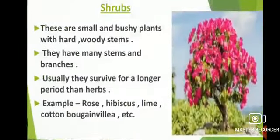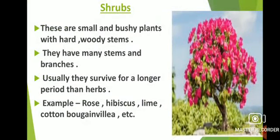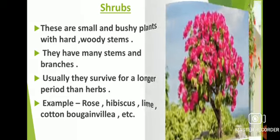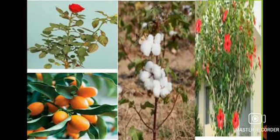The next one is shrubs. These are small and bushy plants with hard woody stems. They have many stems and branches. Usually, they survive for a longer period than herbs. A shrub is a small to medium sized hard woody plant. Such plants live for a few years. Some examples of shrubs are bougainvillea, rose, lime, hina and hibiscus. Here in the pictures you can see the image of some shrubs.